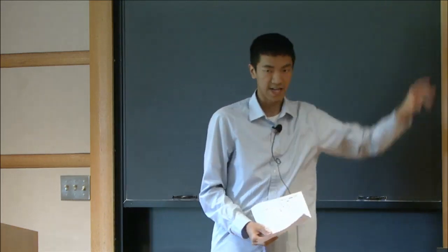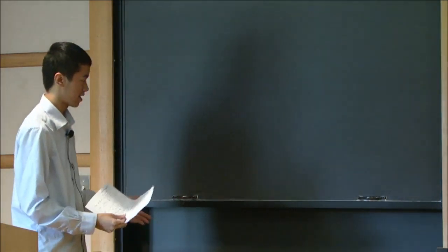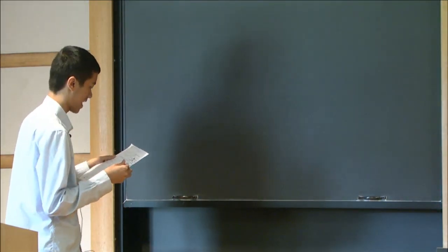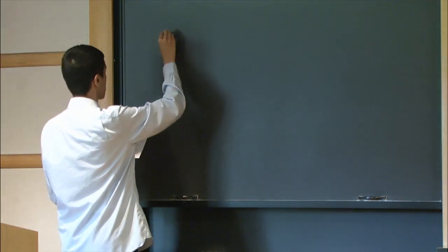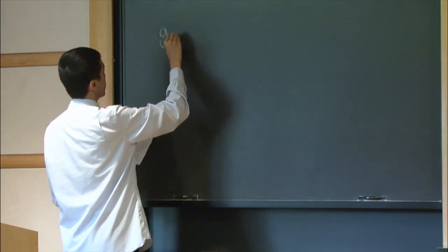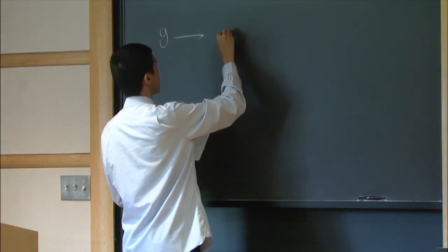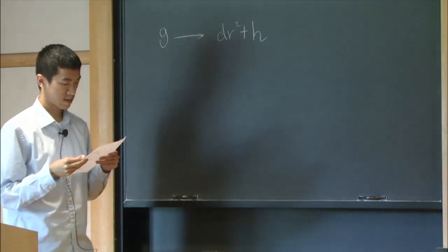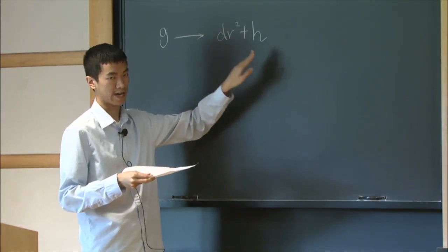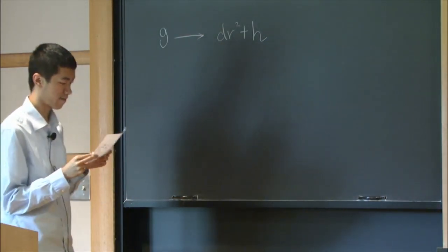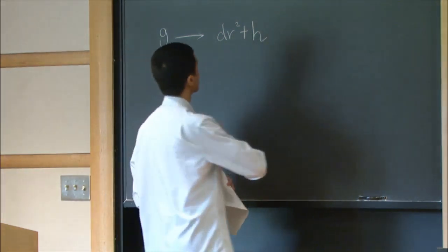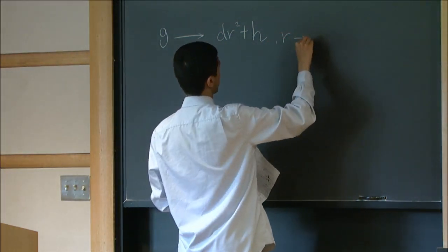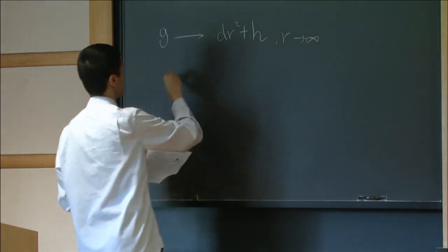So, this is on the cylinder. Then, the first way to generalize is a manifold which is asymptotic to cylinder. So, the metric G converges to the cylinder. In general, this may not be a metric on Sy. It can be another metric. Then, this is called, and R goes to infinity. This is called asymptotically cylindrical.